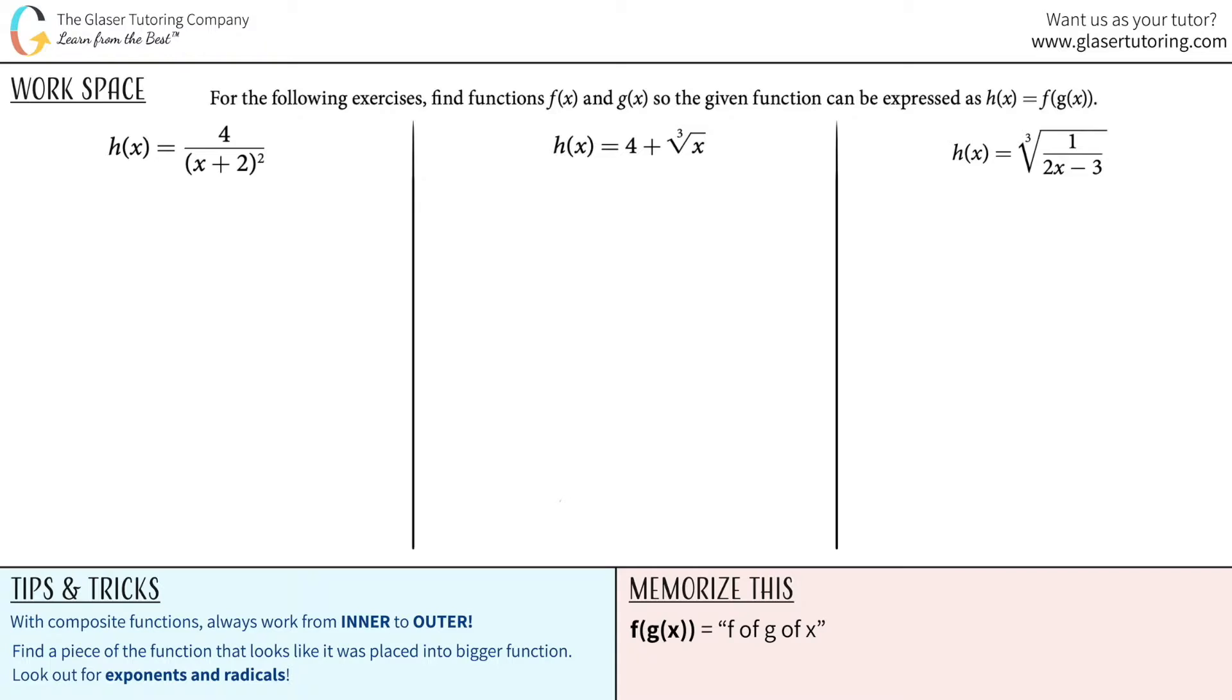For the following exercises, find functions f of x and g of x so the given function can be expressed as f of g of x. Okay, so now they gave us the end composite function and we have to find the individual parts. Super cool, super exciting.